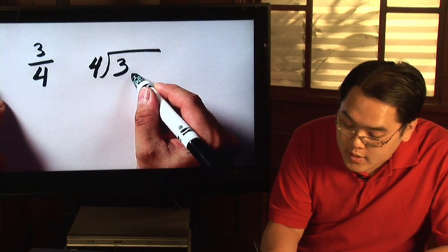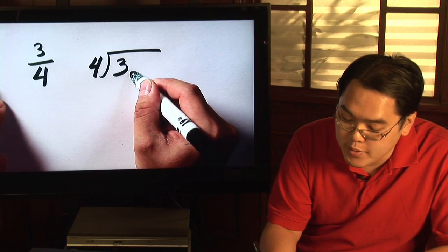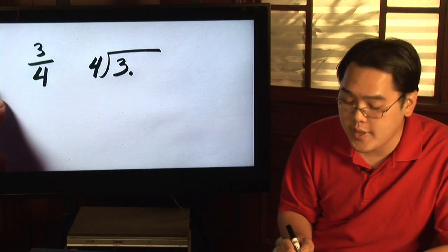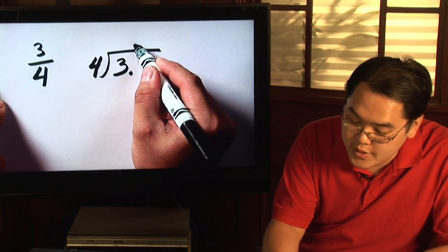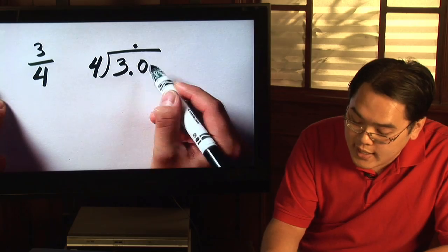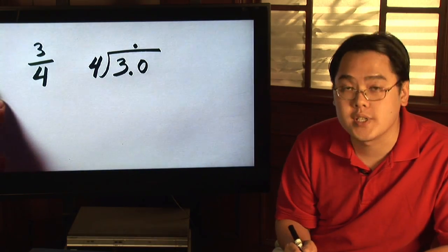Now because you know that you need more zeros, you do need to put a decimal as kind of a placeholder. So you put a decimal down there on the inside and you're going to put a decimal up there and basically add at least one zero to see exactly what 3 fourths is as a decimal.